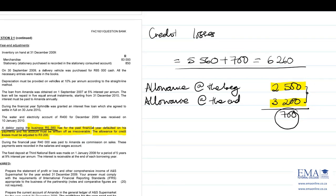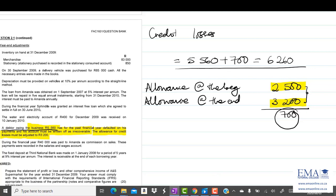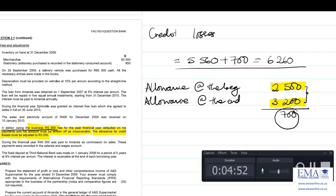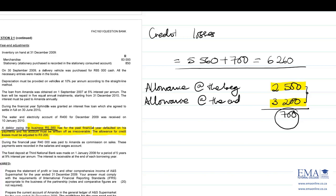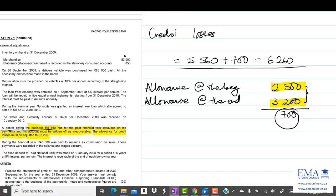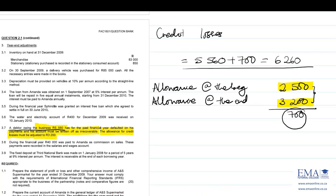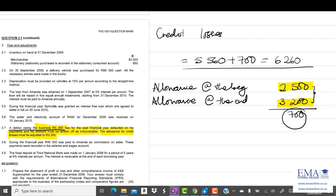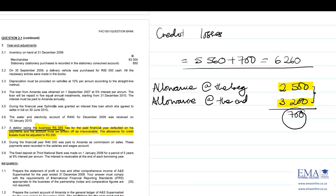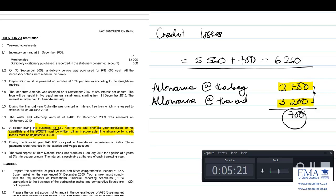That gives you 6,260, which is the amount you record as the credit losses line item. In summary for scenario 1: credit losses started at 2,500 but increased to 3,200. We take the difference of 700 because the allowance was adjusted upward. So total credit losses = 5,560 plus 700 = 6,260.